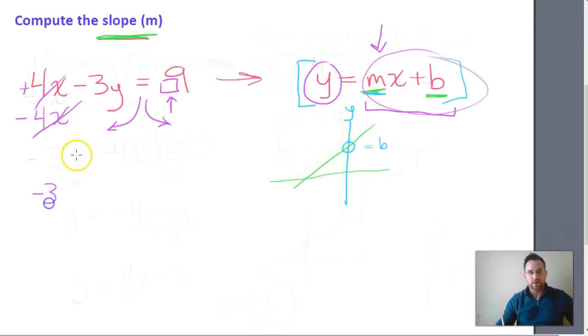So we have negative 3y, which we're bringing down, equals, we took away 4x on this side. So we have to take away 4x over here. So we're going to have negative 4x and that's a positive 9. So we see the same form coming together.